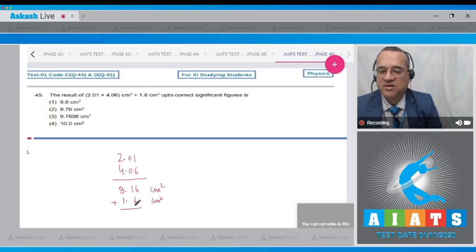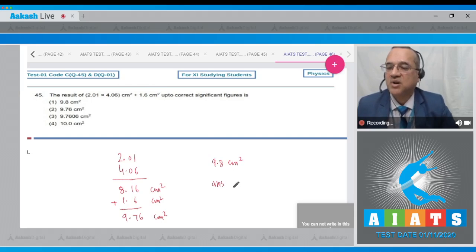What is the rule in addition? Number of digits after decimal is 1, so you have to keep 1. This becomes 9.76 cm². Now you have to keep only one digit in addition rule. 7 will change to 8 because this is more than 5. Therefore, the addition becomes equal to 9.8 cm². Answer is 9.8 cm² and answer is first option.